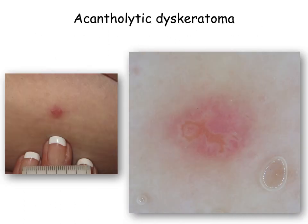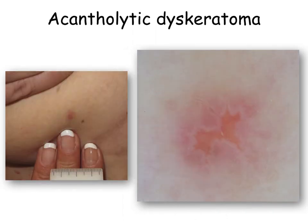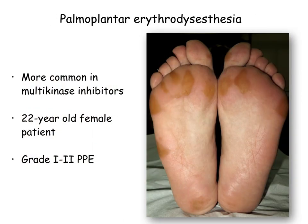Another very characteristic lesion seen in the course of BRAF inhibitor treatment is the acantholytic dyskeratoma. It appears as a small eroded and pruritic papule of the skin. Dermoscopically, it displays a central stellate erosion on a reddish background, as seen in these two clinical examples. Palmoplantar erythrodysesthesia is more common with multikinase inhibitors; here you can see a typical example in a 22-year-old female patient.